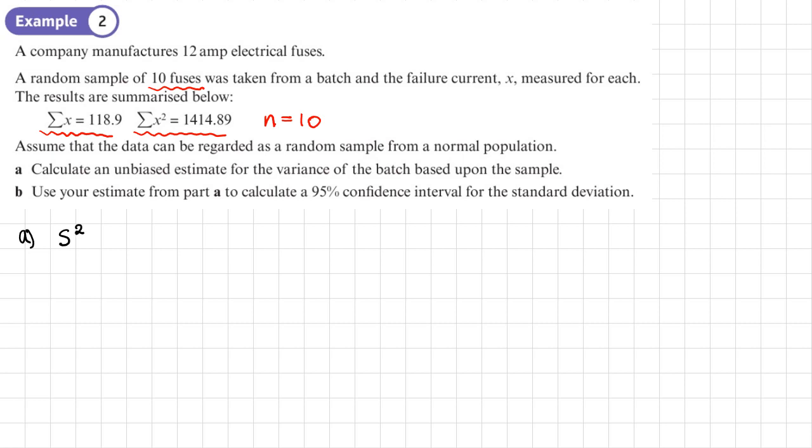Just a reminder of how we find an unbiased estimate. It's 1 over (n-1) times by the sum of x squared minus (sum of x squared) over n. The reason we need to calculate an unbiased estimate for the variance is because we don't have the data. We just have these summary statistics. Any question where you're given summary statistics, you need to calculate an unbiased estimate for the variance. This question tells us to do that, but you may come across questions where you're just given these values. You will automatically need to calculate that unbiased estimate, even if it doesn't ask you to do so.